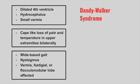Next is a patient that presents with a cape-like loss of pain and temperature in the upper extremities bilaterally. This is syringomyelia — a syrinx or a ball of fluid that forms and compresses the spinothalamic tract bilaterally in the cervical spinal cord.